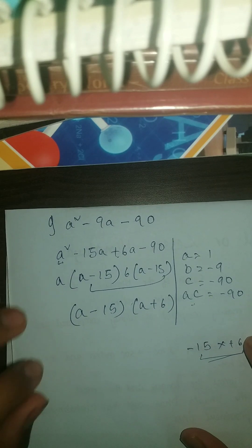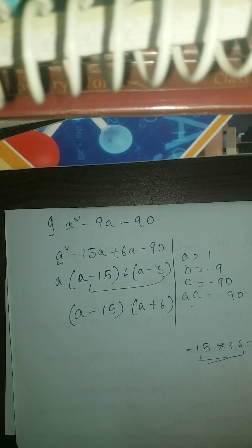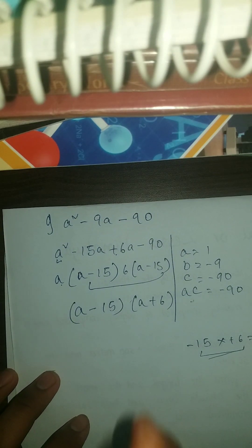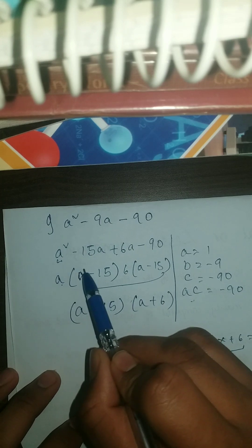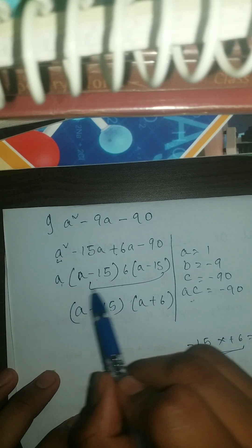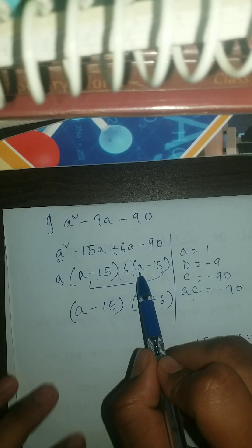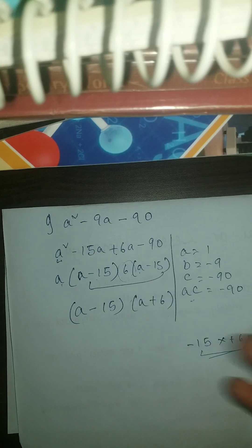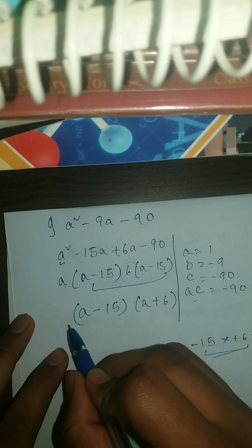Hey guys, this is your answer. And I would highly recommend you before writing your answer, I would highly recommend to check. How to check? Let me show you. a into a is your a square, a into minus 15 is your minus 15a. Then here 6 into a is your 6a, and 6 into minus 15 is your minus 90. So yes guys, this is your answer.